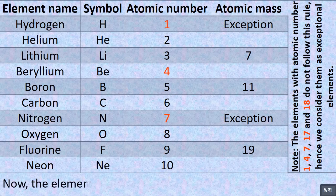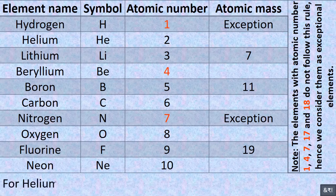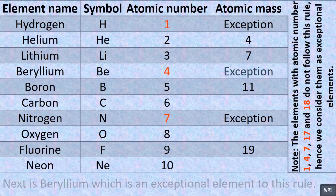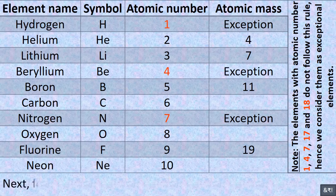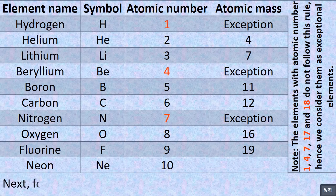Now the elements having even atomic number. The first element with even atomic number is helium. For helium: 2 multiplied by 2 equals 4. Beryllium is an exceptional element to this rule. For carbon: 2 multiplied by 6 equals 12. For oxygen: 2 multiplied by 8 equals 16. For neon: 2 multiplied by 10 equals 20.